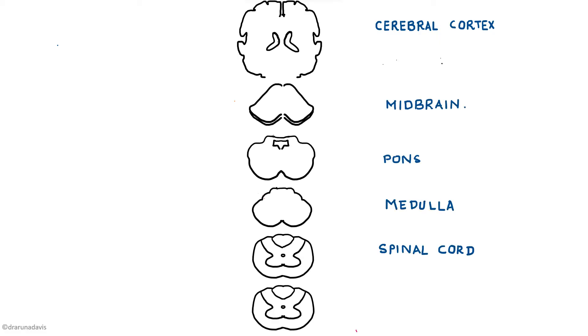Whenever you draw any tract, draw cut sections at different levels: cerebral cortex, midbrain, pons, medulla, and spinal cord. Then start drawing the tract. Since this is a descending tract, it starts from the cerebral cortex. Which part? Sixty percent of the fibers start from the motor cortex whereas 40% arise from the sensory cortex. So even though this is a motor tract, fibers arise from both motor and sensory cortex. By motor cortex we mean all three areas: primary motor cortex, pre-motor cortex, and supplementary motor cortex.